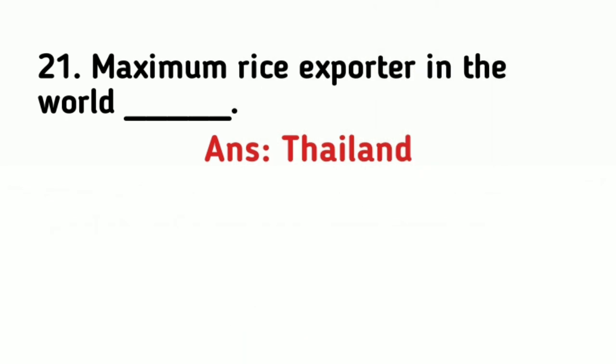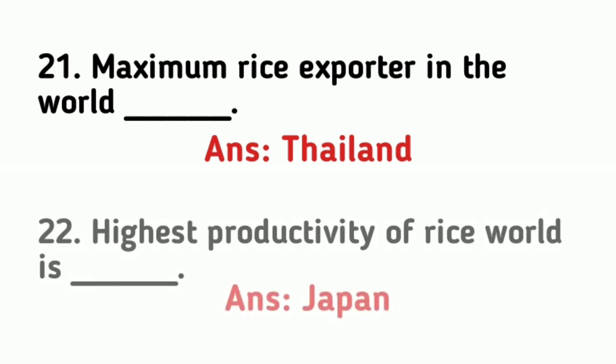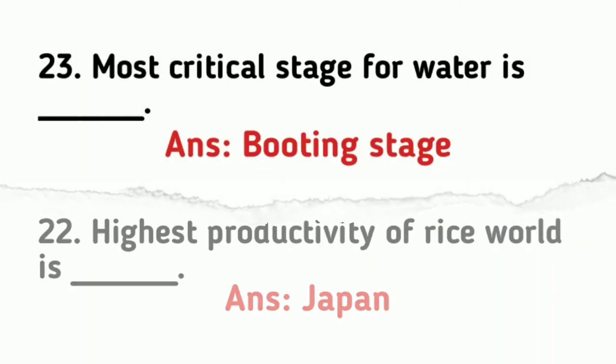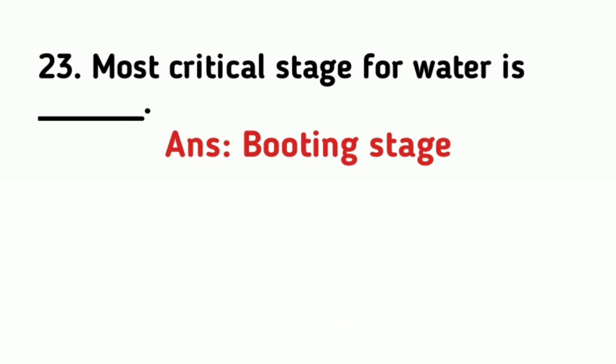The maximum rice exporter in the world is Thailand. The highest productivity of rice in the world is in Japan. The most critical stage for water in rice is the booting stage, which is the initial tillering stage.